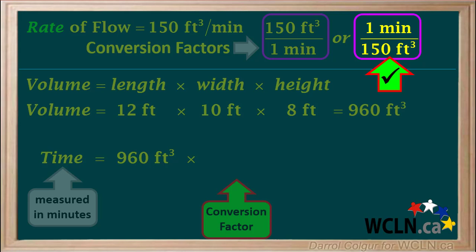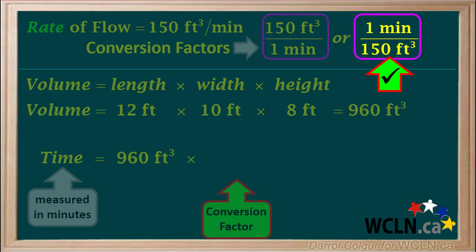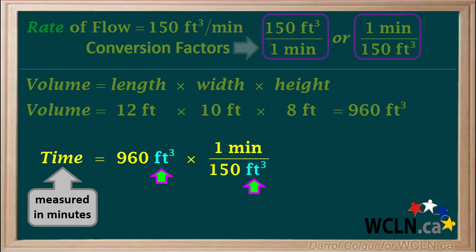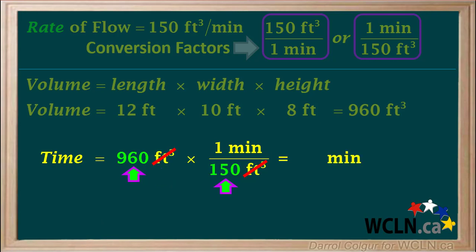In the second conversion factor shown at the top of the page, minutes is on the top and feet cubed is on the bottom. So this is the correct conversion factor to use. We multiply the 960 feet cubed by the conversion factor one minute over 150 feet cubed. Notice that the unit feet cubed appears on both the top and the bottom of our expression, which means feet cubed can be cancelled out, leaving us with the unit minutes. To get the answer, we take 960 and divide by 150, which gives us 6.4 minutes.